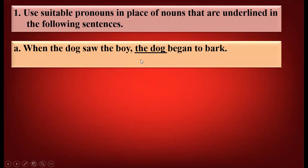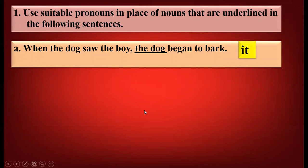When the dog saw the boy, the dog began to bark. Now here, the two words 'the dog' are underlined. So dog is a noun. We have to use a pronoun instead of dog. Dog is an animal. So for animals and small babies, we use the pronoun 'it'. So we'll write 'it' over here as a pronoun.